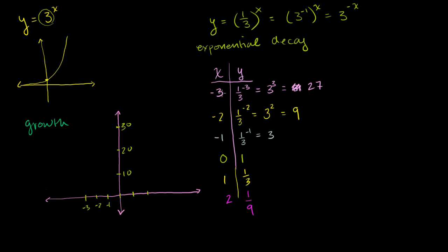So when x was negative 3, y was 27, which is right about there. When x was negative 2, y was 9, which is right about there. When x is negative 1, y is 3, right about there. When x is 0, y is 1. When x is 1, y is one-third.